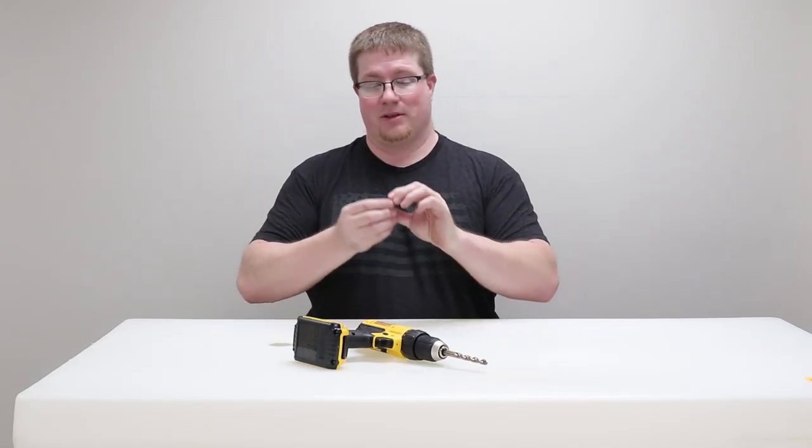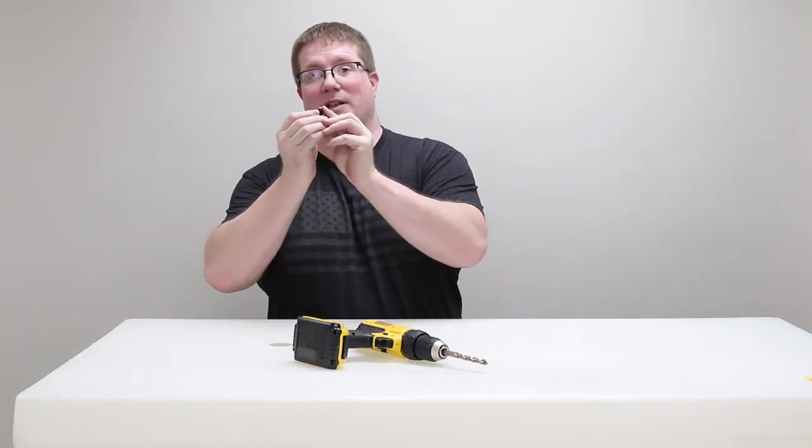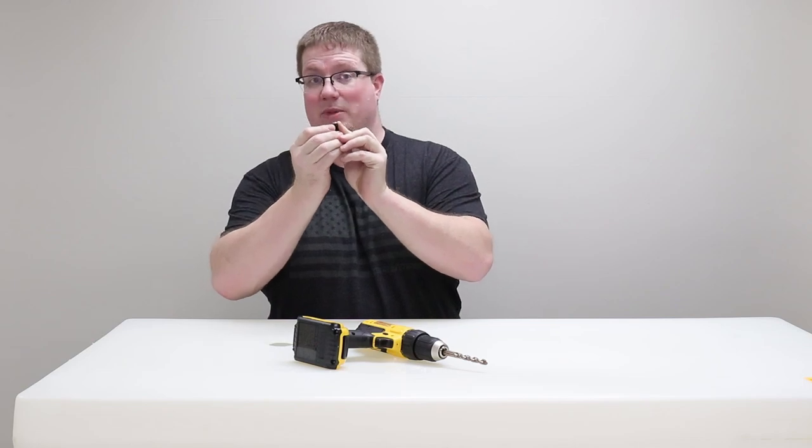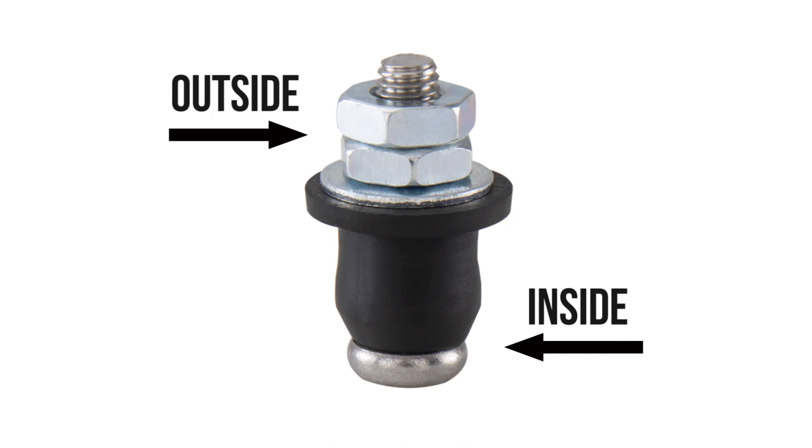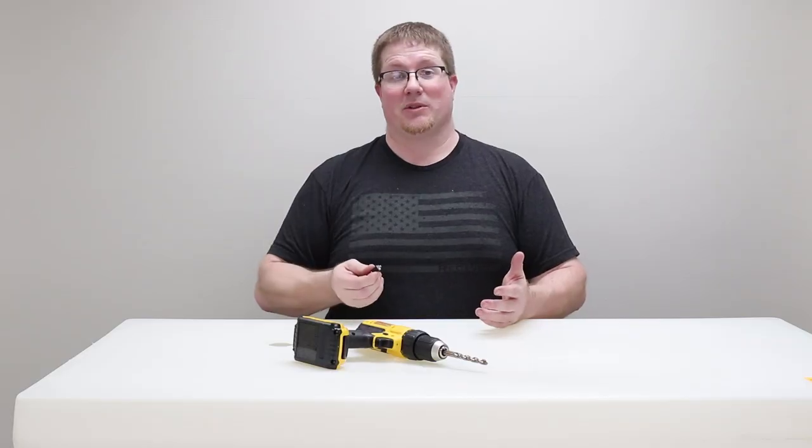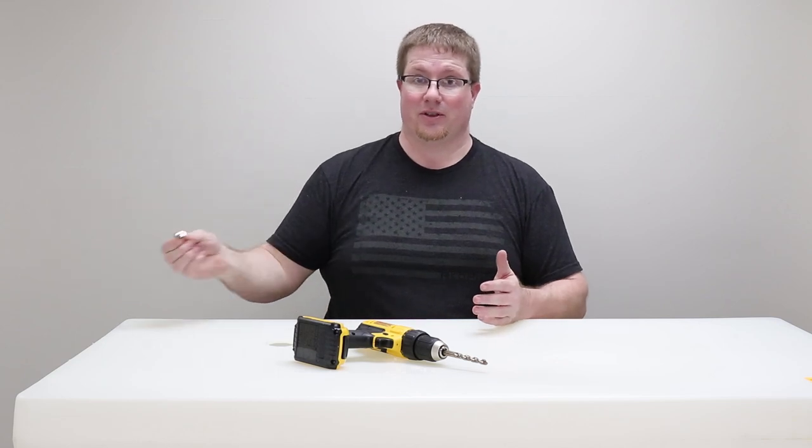After you have your hole drilled, take your probes. This is the button head side. You'll want to take the button head side and place it into the tank. Threaded side is outside. If you put the threaded side inside, you won't be able to link it up to your gauge.